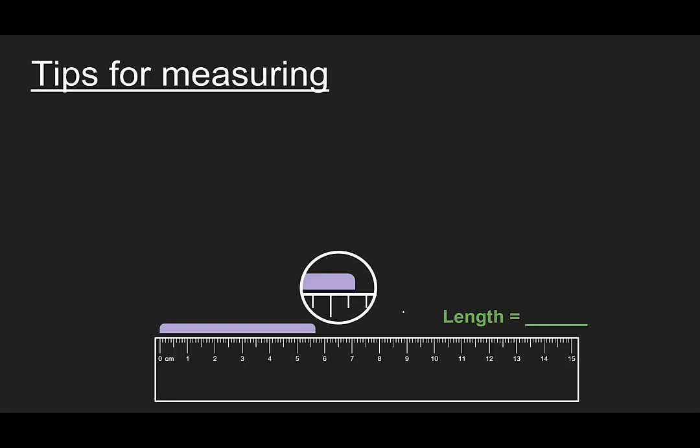Now let's dig in a little bit further for tips on measuring an object. First of all, I would point out you want to know what are the units for the instrument you're using. And generally those units will be written right on that instrument. For example, this one has centimeters written on it.